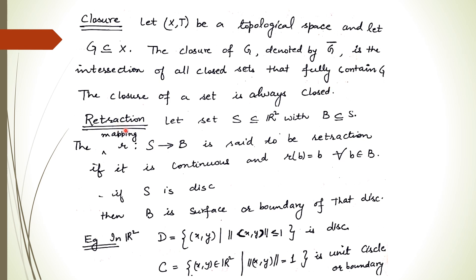Next is retraction. Let S be any subset of R-squared and B be any subset of S. If we define a mapping R going from S to B, then this mapping is called a retraction if it is continuous and R(b) equals b for all b belonging to B. Basically, every image of the set S goes to the set B, and the mapping is continuous.